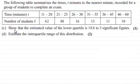And in part C we've now got to show that the estimated value of the lower quartile is 18.6 to three significant figures and that's for one mark. And then in part D go on to estimate the interquartile range of this distribution for two marks.